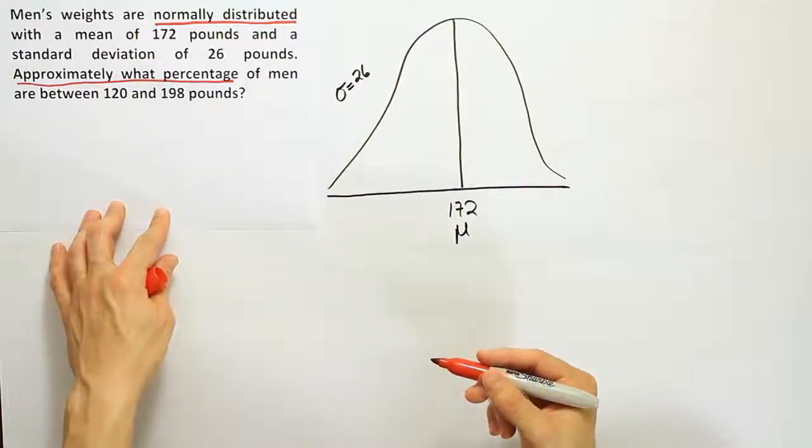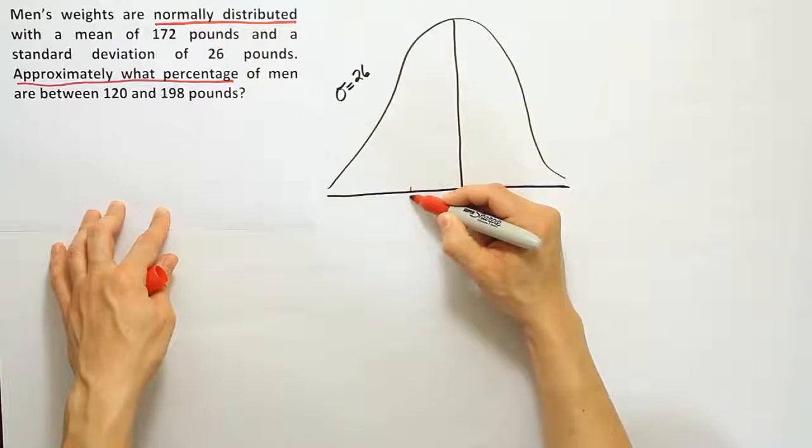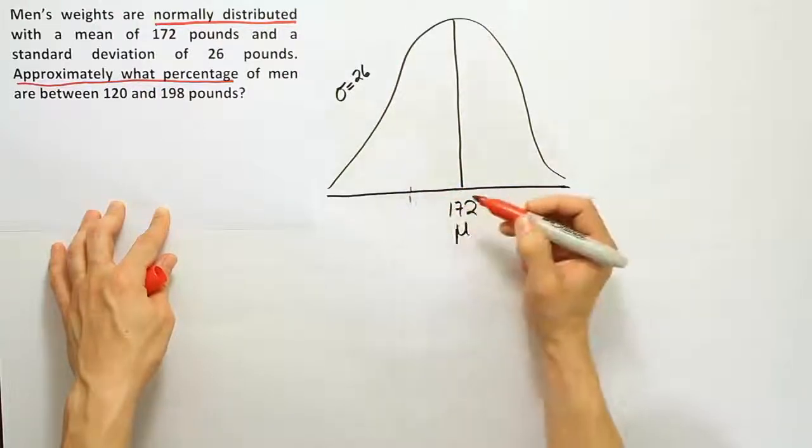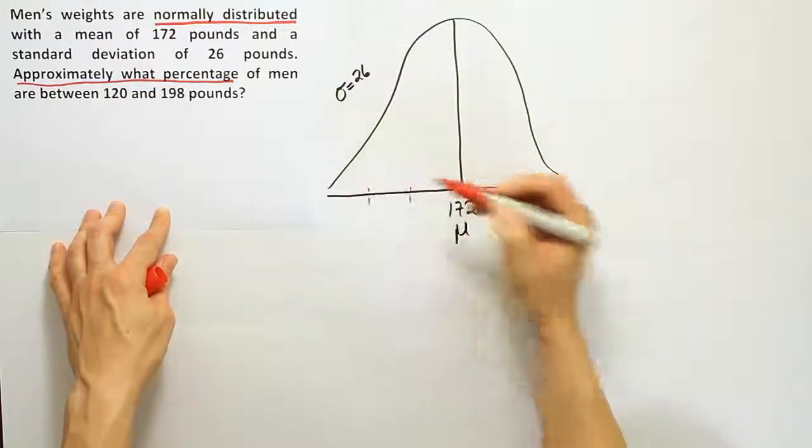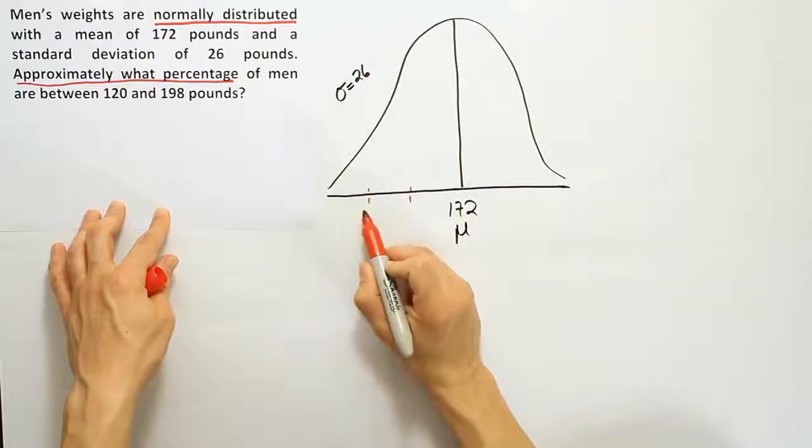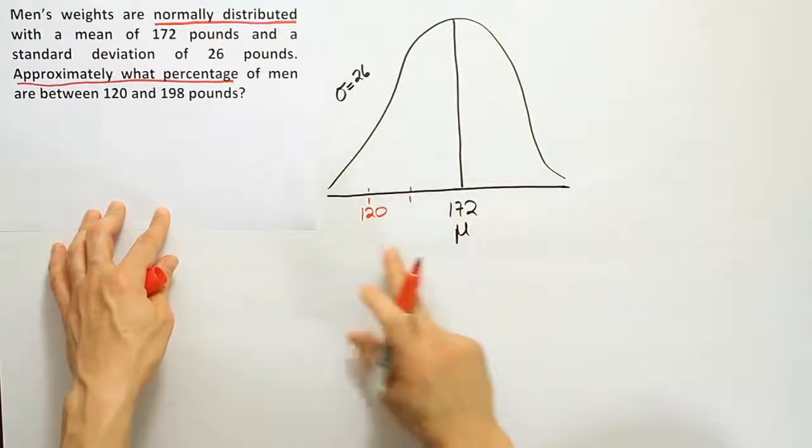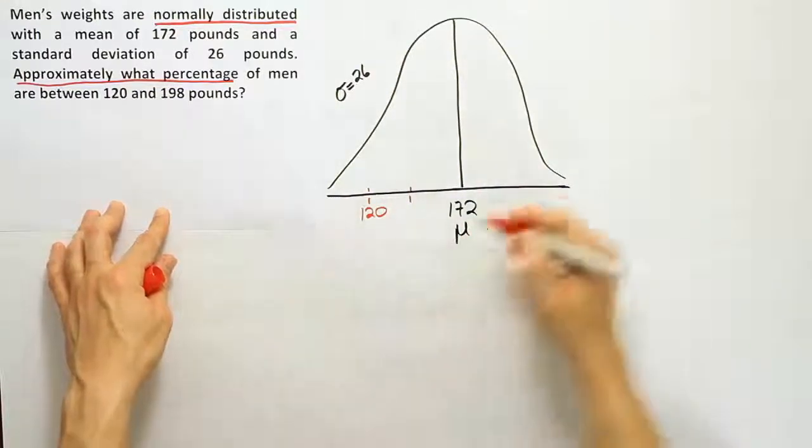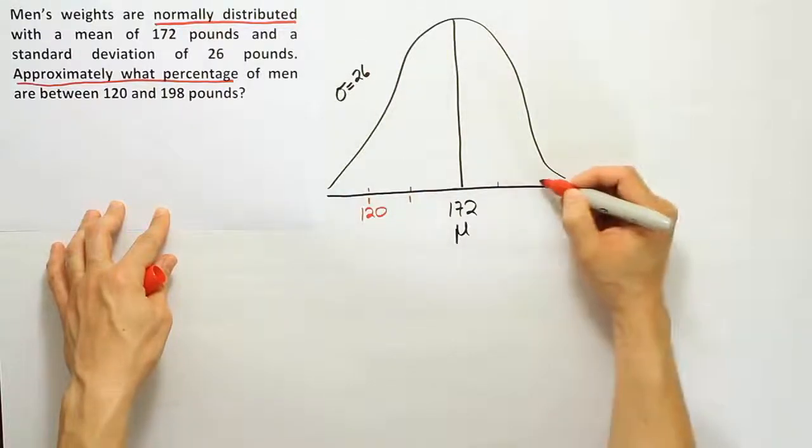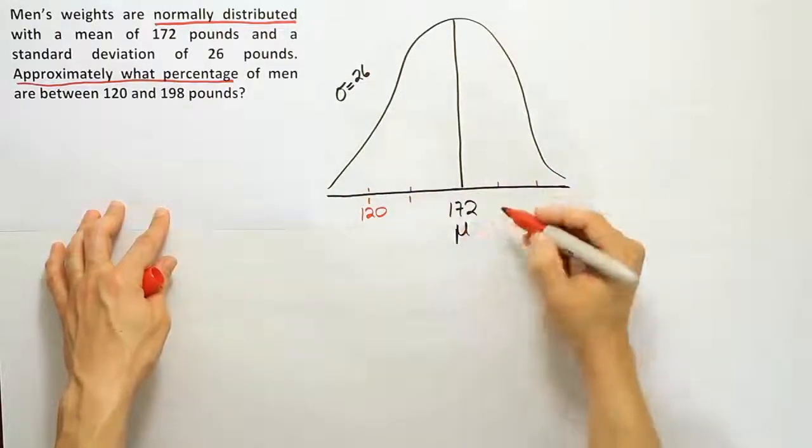I'm going to put the two numbers from the problem on the curve - talking about what percentage will be between 120 and 198. I think that 120 would be something below the mean, so I'm going to draw some tick marks here and put 120 down here, that's certainly below average.